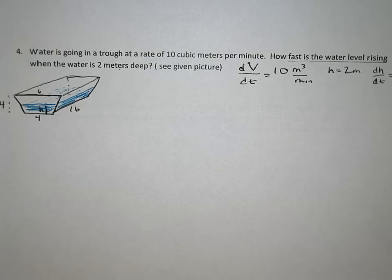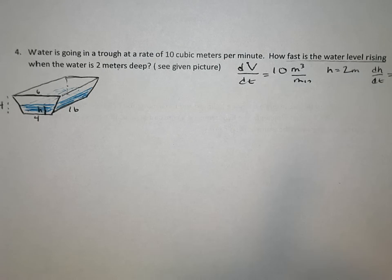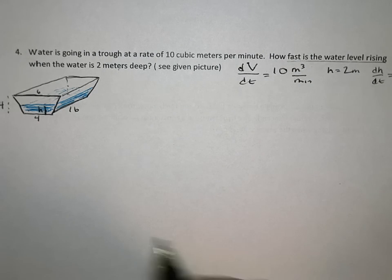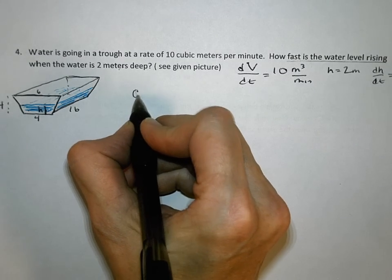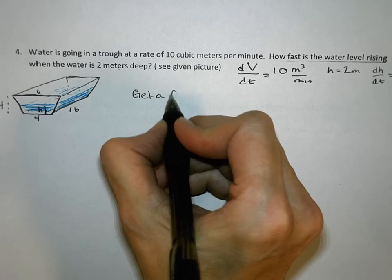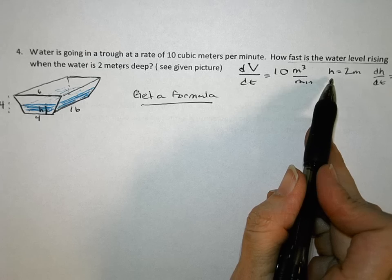Okay, so we've actually finished one step of this problem, just pulling all the information given out of the problem. But we have two other main steps. The first thing, and the hardest thing by far on this problem, is get a formula. There has to be a formula somewhere involving volume and height.